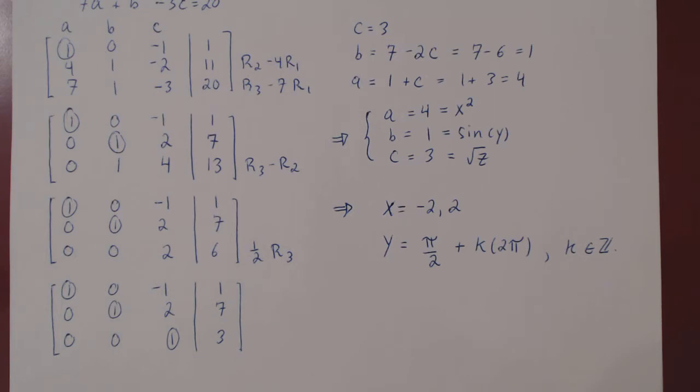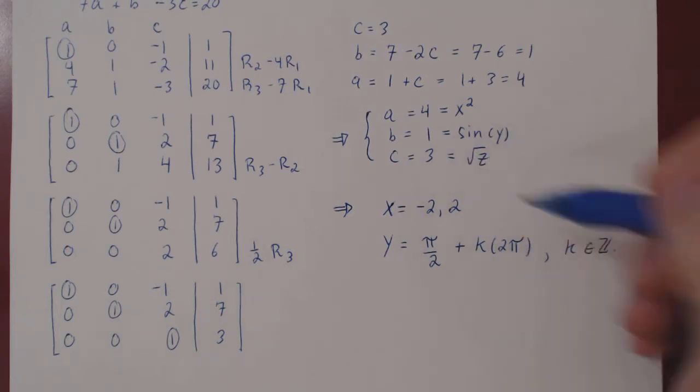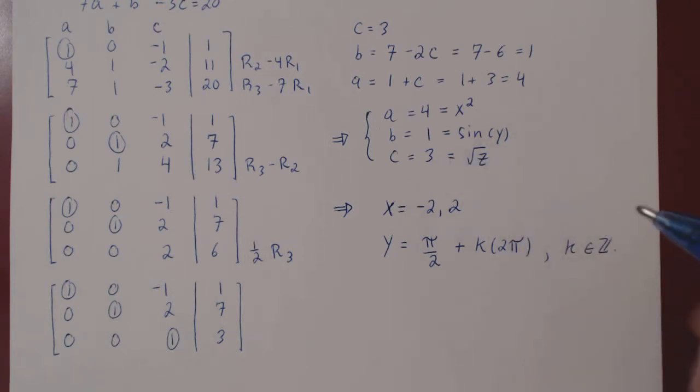And finally, if root of z is 3, clearly z must be positive, and it must be 9.